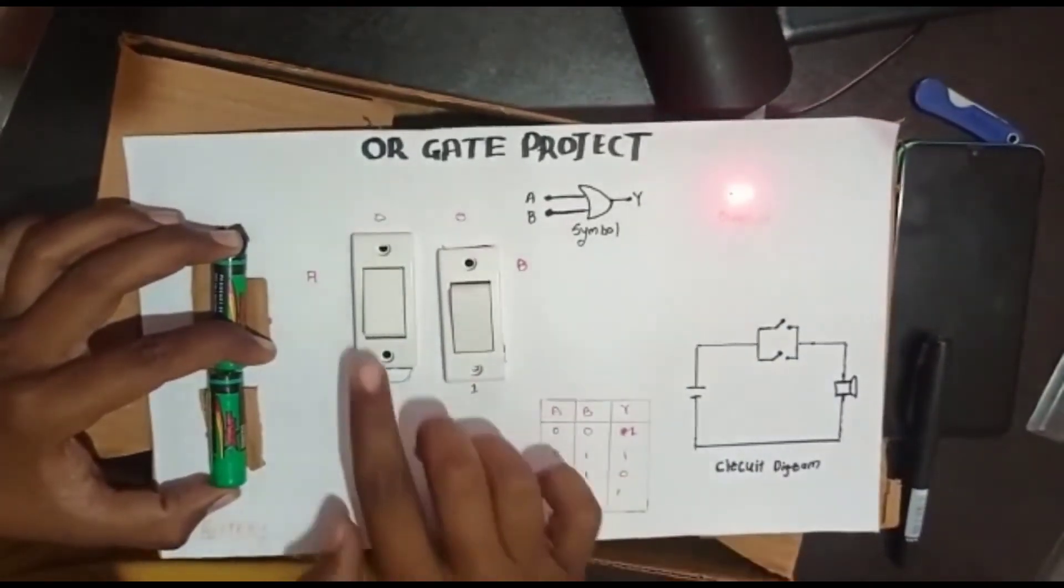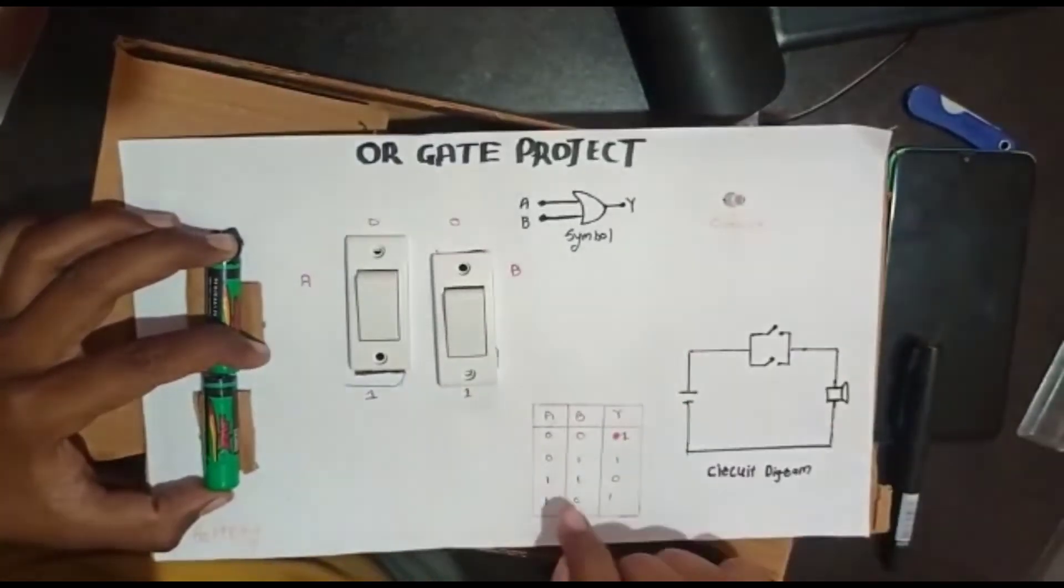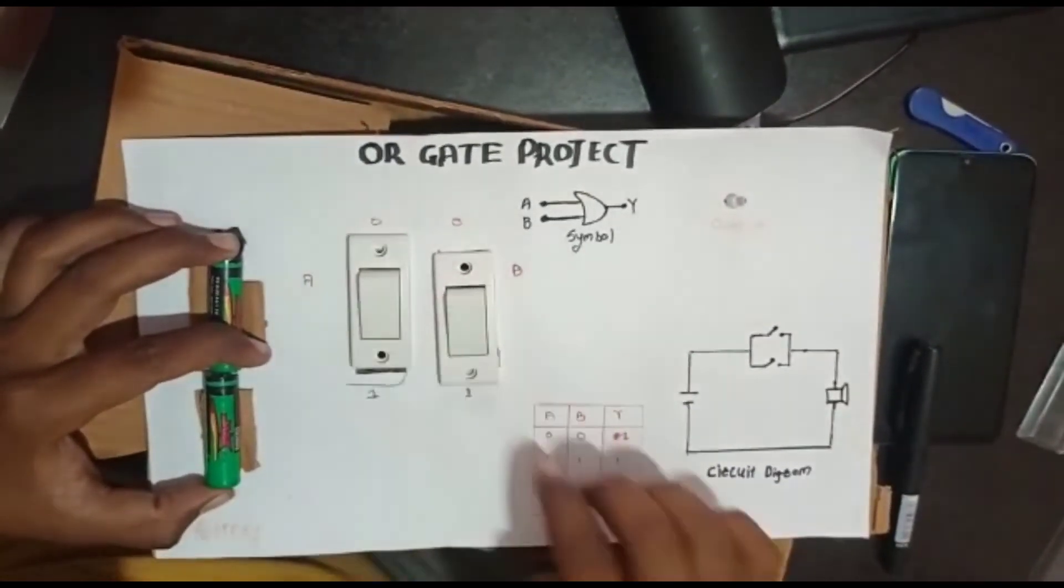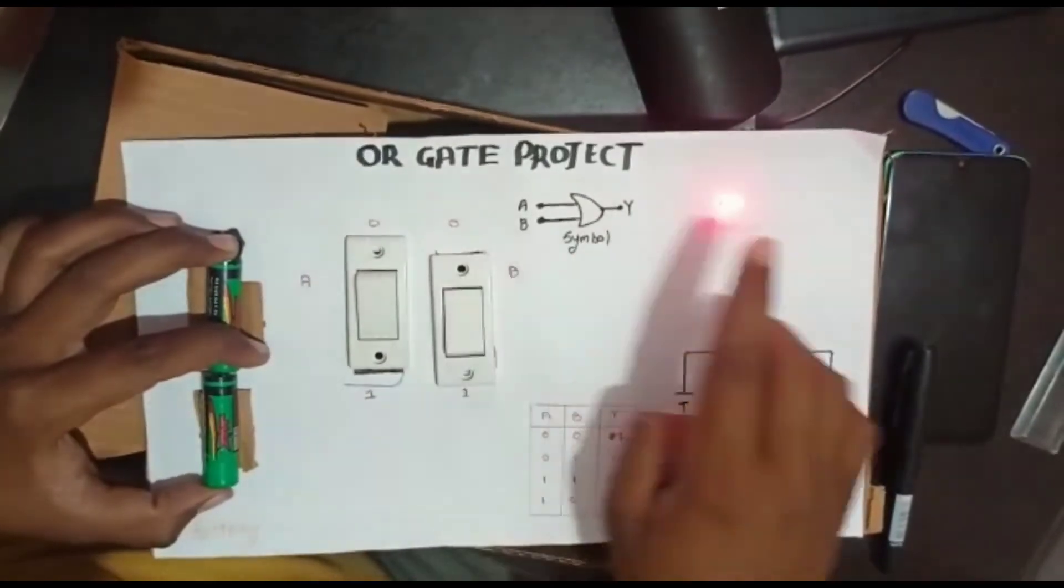The most common applications of OR GATE are in automation, delegation, and alarm systems. The system can be used in homes or offices.